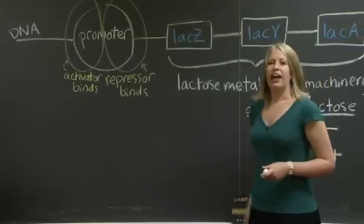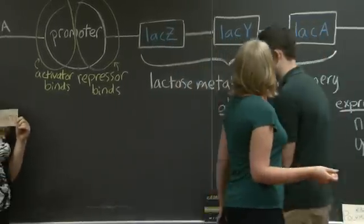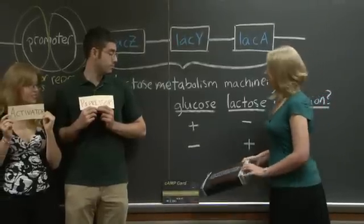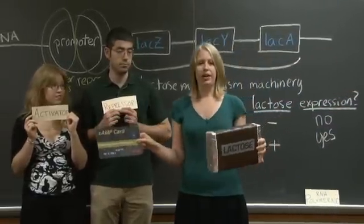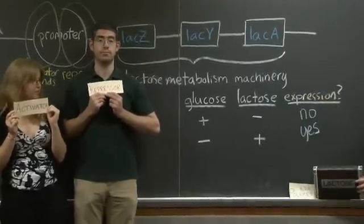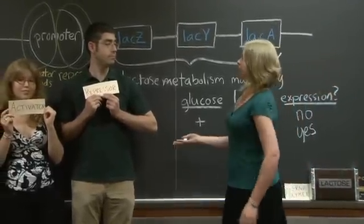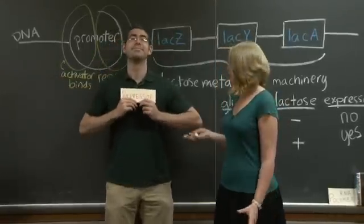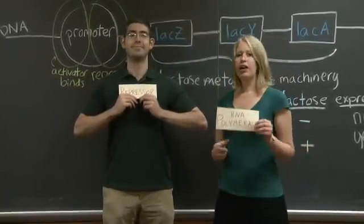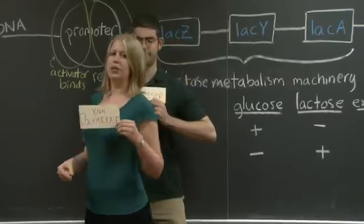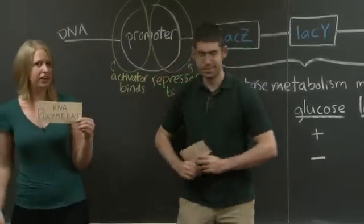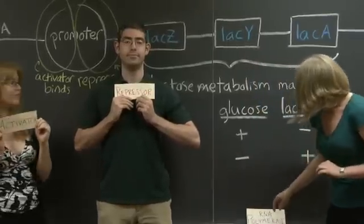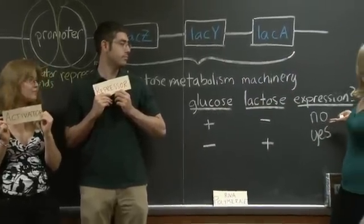Okay, so let's give it a try. In this first situation, we have glucose, we don't have lactose. So, I have neither my lactose nor my CAMP in the system. Repressor, can you bind? The repressor is bound. Activator, can you bind? No, the activator is not bound. The repressor is bound. And so, when RNA polymerase comes to the promoter, RNA polymerase is not able to bind at this promoter. And thus, it's not able to express these genes. As we can see here, there is no expression.